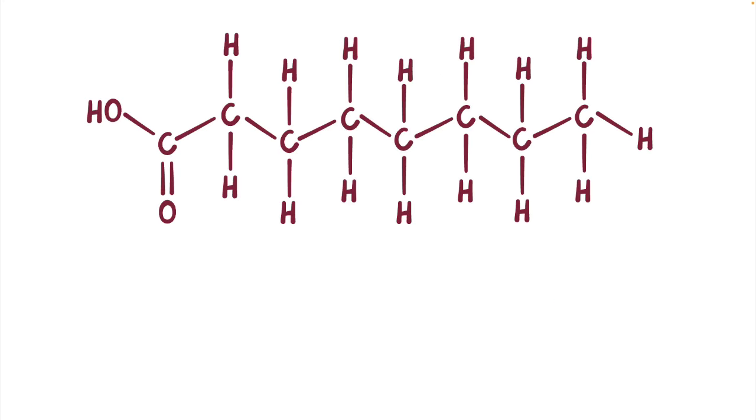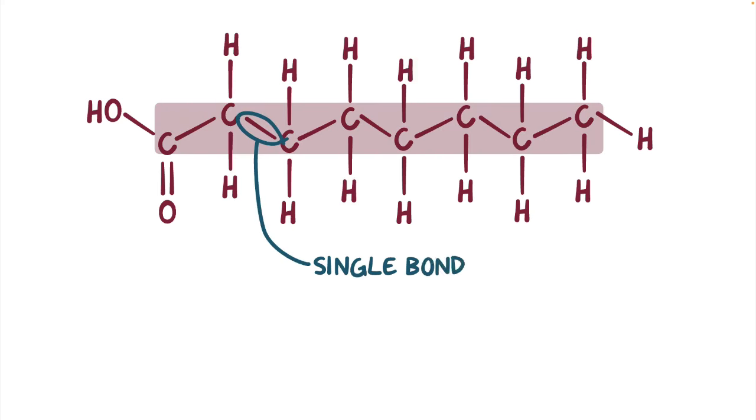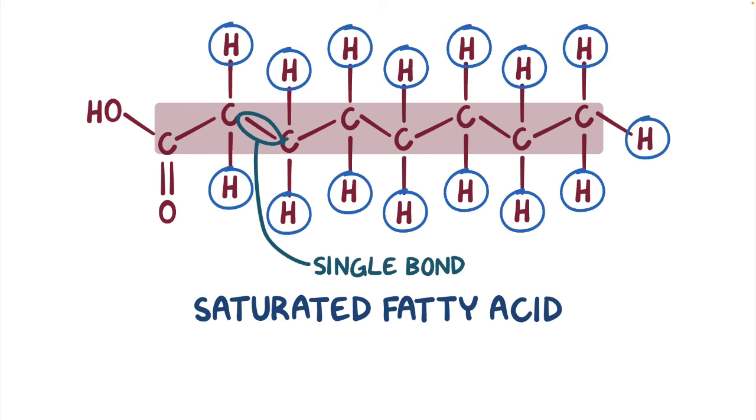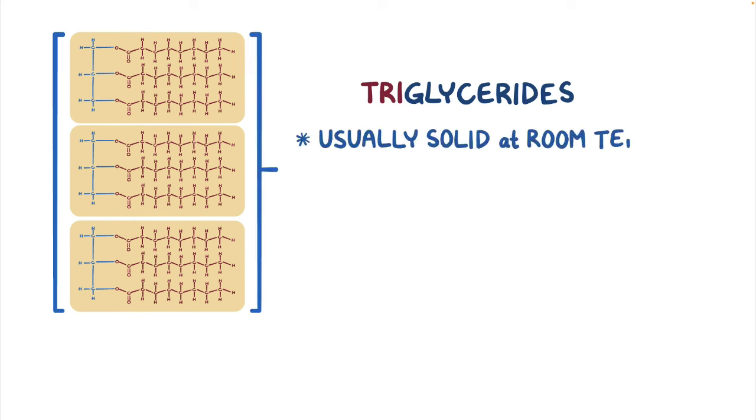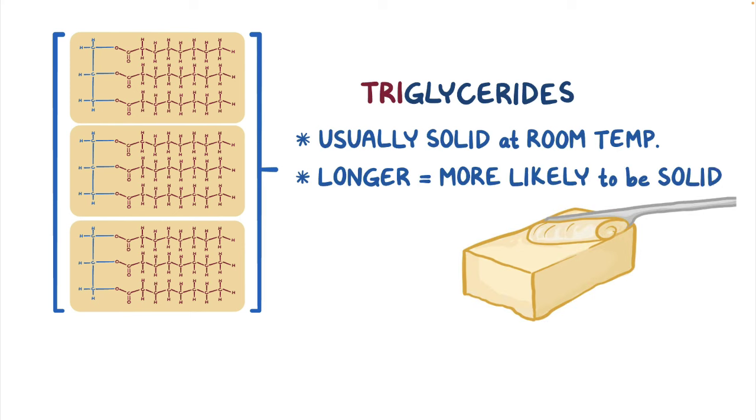Fatty acid chains are also categorized by the bonds connecting the carbons in the chain. A single bond is just one bond between the carbon atoms, and when a fatty acid chain has only single bonds, it's called a saturated fatty acid, because it has as many hydrogen atoms as possible, or it's saturated with them. Triglycerides with saturated fatty acids are nice and straight, so they pack together really well, and as a result they're usually solid at room temperature. And the longer the saturated fatty acid chain, the more likely it'll be solid at room temperature.